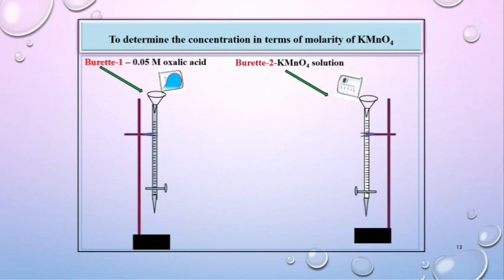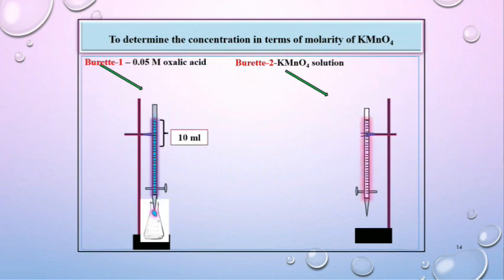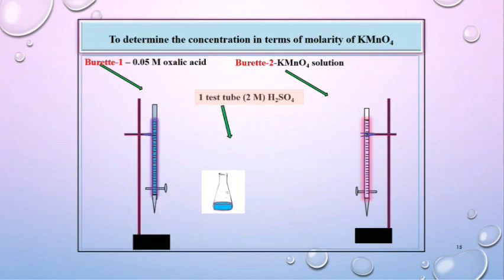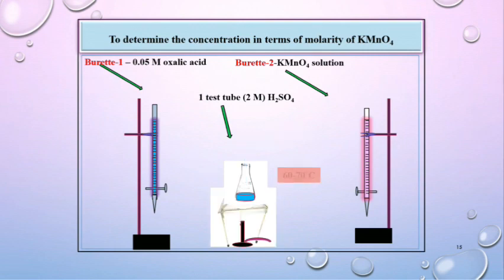Similarly, refill the burette number 1 with 0.05 molar oxalic acid solution and burette number 2 with KMnO₄ solution. Then take 10 ml of 0.05 molar oxalic acid solution and add to it 1 test tube, 2 molar H₂SO₄. Thereafter, heat this solution.